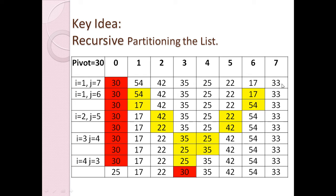Similarly, j starts at seven and moves from right to left, j minus minus. We are looking for an element lesser than the pivot element. This element at j equals seven is not lesser than the pivot, so we move to j equals six and stop there, since that element is less than the pivot.